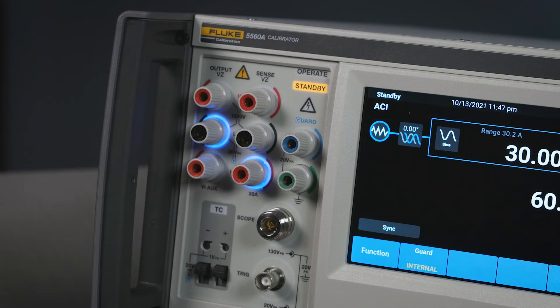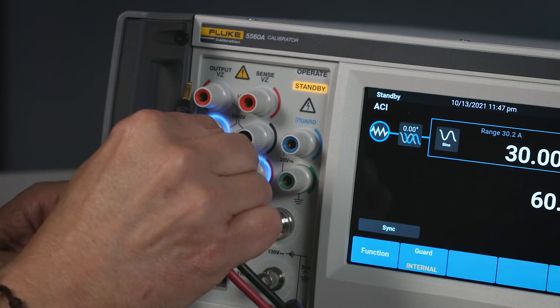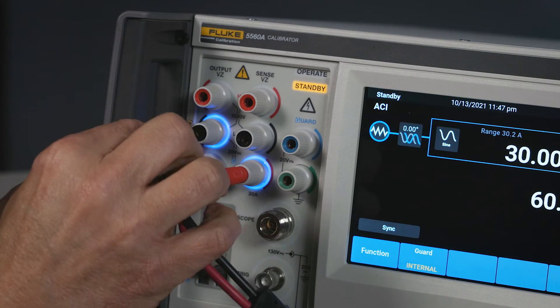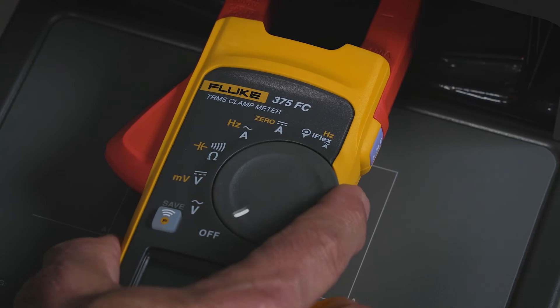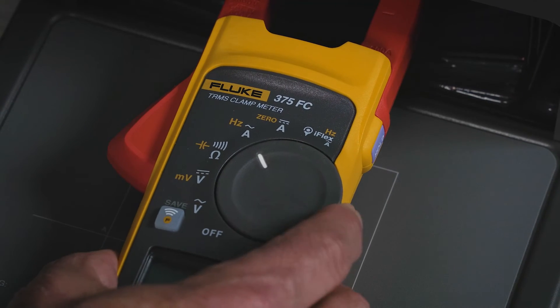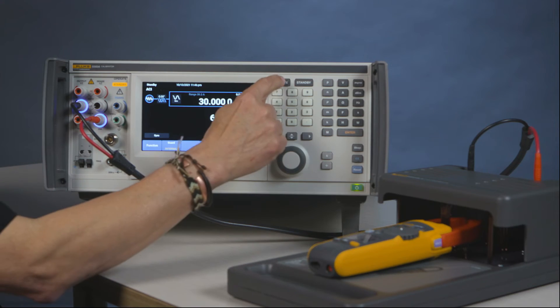The visual management tells me where I need to be connected. I connect my leads, I set my DMM to AC current, I press operate.